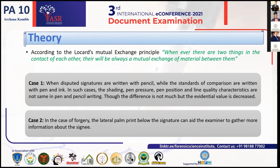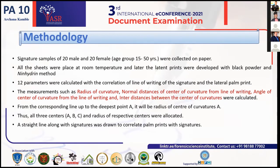In cases of forgery, the lateral palm print below the signature can aid the examiner in gathering more information about the sign. In the methodology, many authors have worked on this topic, but the approach described here involves 20 male and 20 female samples on paper. The sheets were placed at room temperature and the latent prints were developed with the help of black powder and the ninhydrin method. Then 12 parameters are calculated with the correlation of the line of writing of the signature and the lateral palm print.